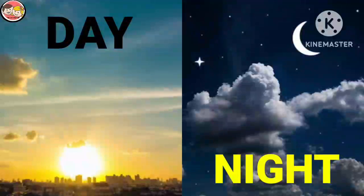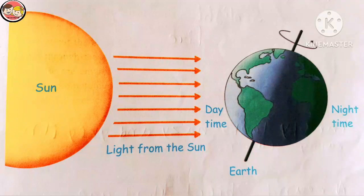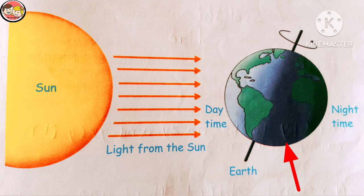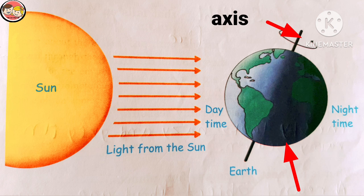Do you want to know how day and night are formed? There is an interesting fact, so let's explain. Look at the picture, listen and observe very carefully. This is the earth — the earth is a planet on which we live. The earth continuously spins on its axis. Axis is an imaginary line, and the earth takes 24 hours to spin on its axis once.